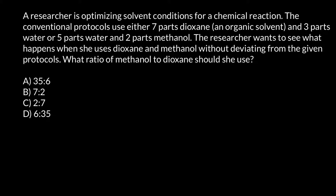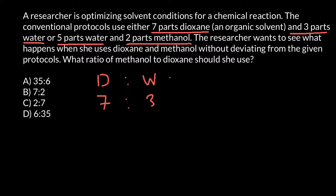First of all, we have the first ratio: seven parts of dioxane — I would use D to designate dioxane — and three parts of water. This is going to be our first ratio. Another variant would be five parts of water and two parts of methanol. I would use M for methanol, so we have five parts of water to two parts of methanol.